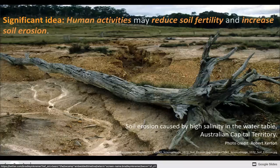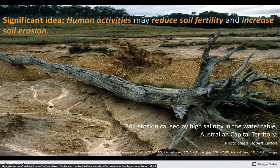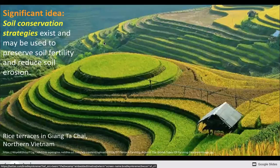Human activities can reduce soil fertility and increase erosion. You can get high salinity by using too much water, or you can have increased erosion by over-planting, basically weakening the soil.